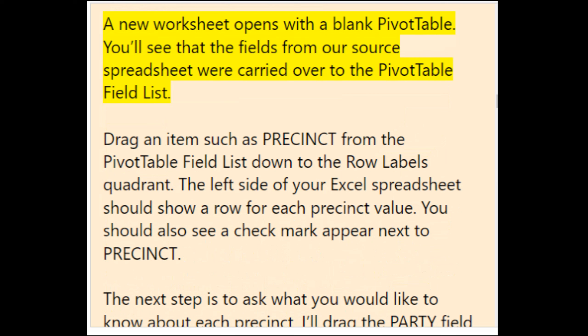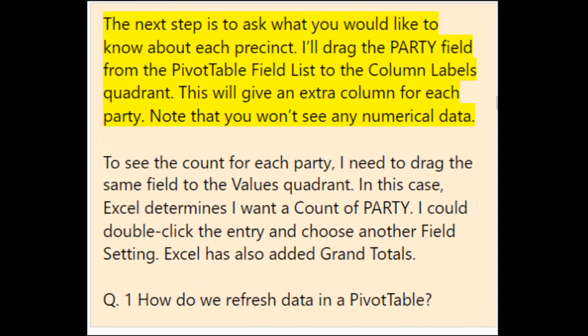The fields from your source spreadsheet are carried over to the pivot table field list. Drag an item such as Precinct from the field list down to the Row Labels quadrant — the left side of your spreadsheet shows a row for each precinct value. Drag the Party field to the Column Labels quadrant for an extra column per party. To see the count for each party, drag the same field to the Values quadrant. Excel also adds grand totals.